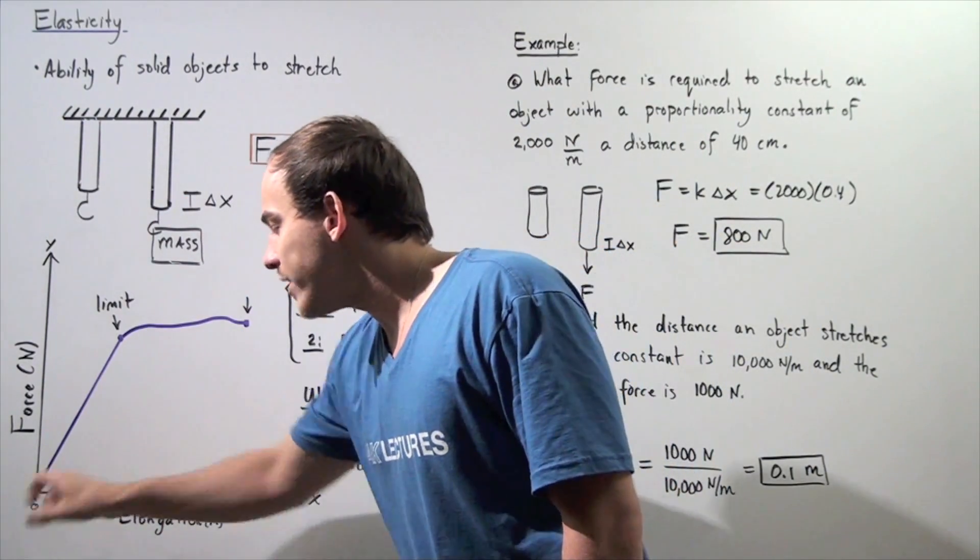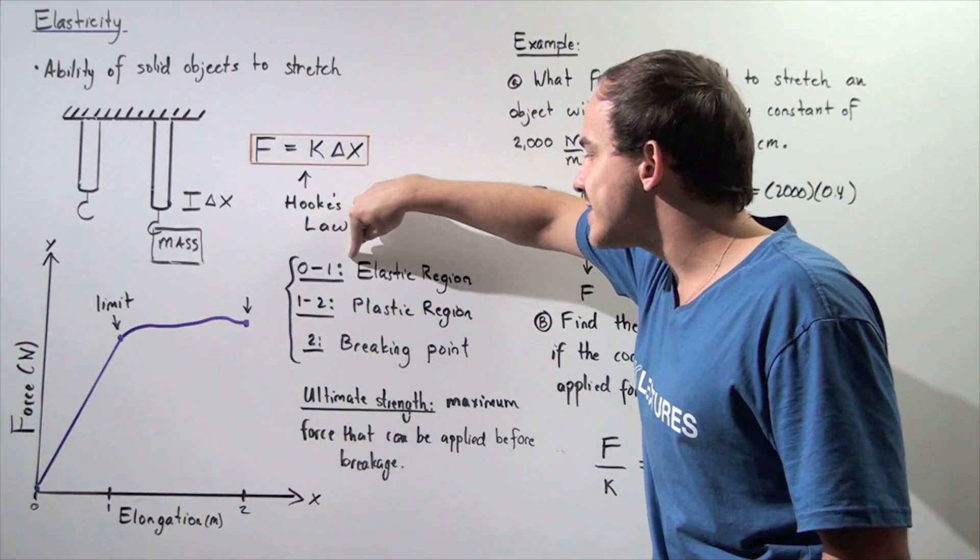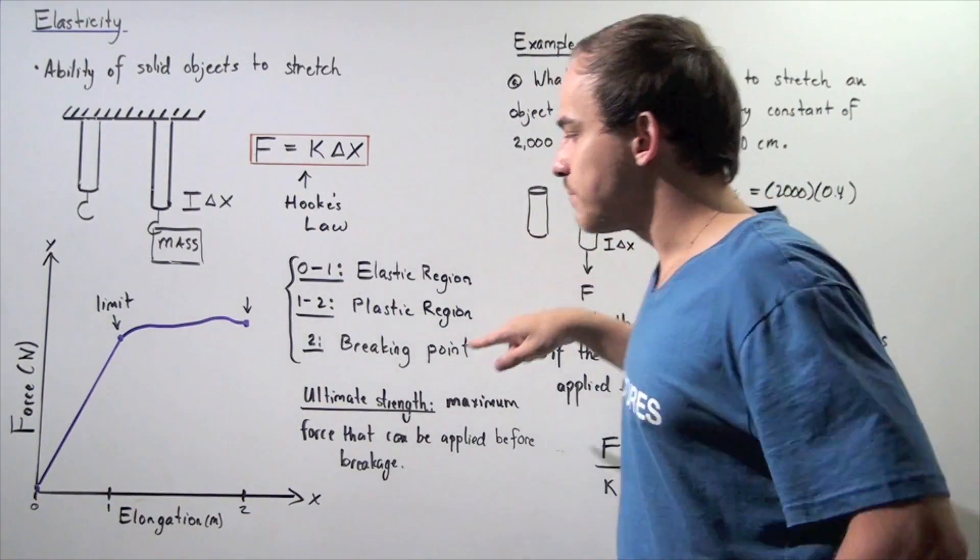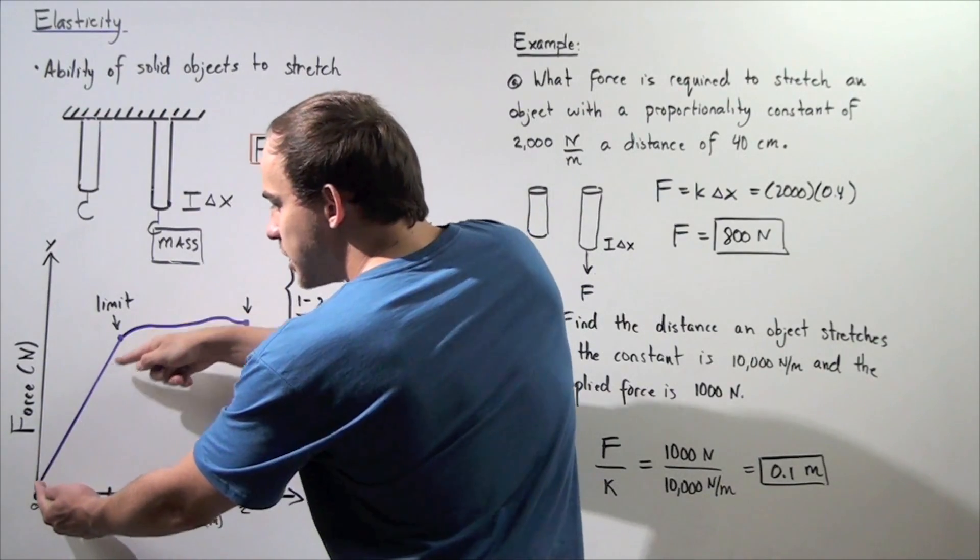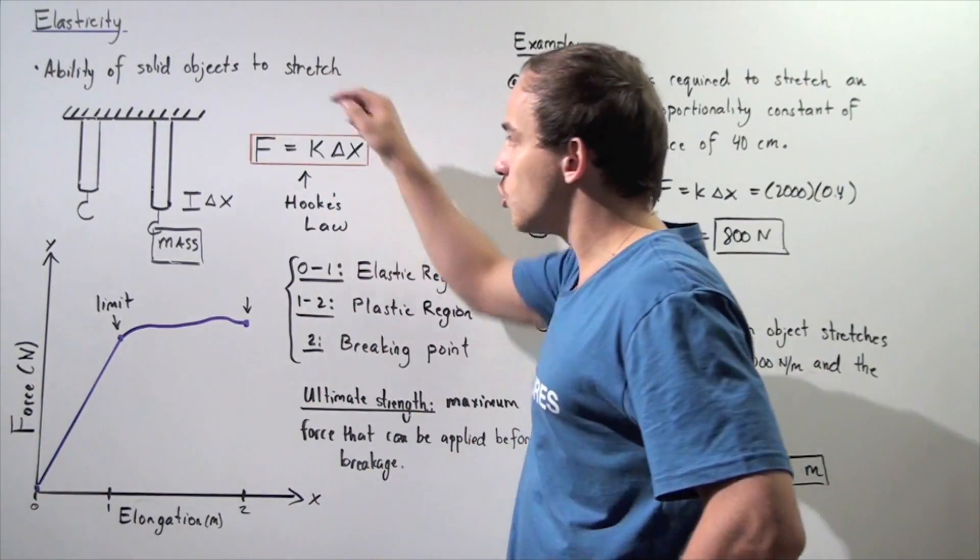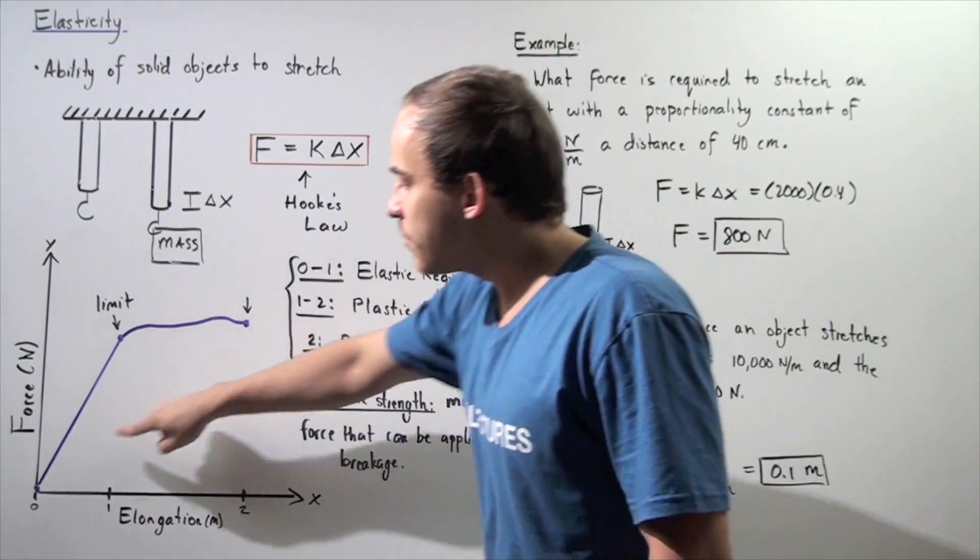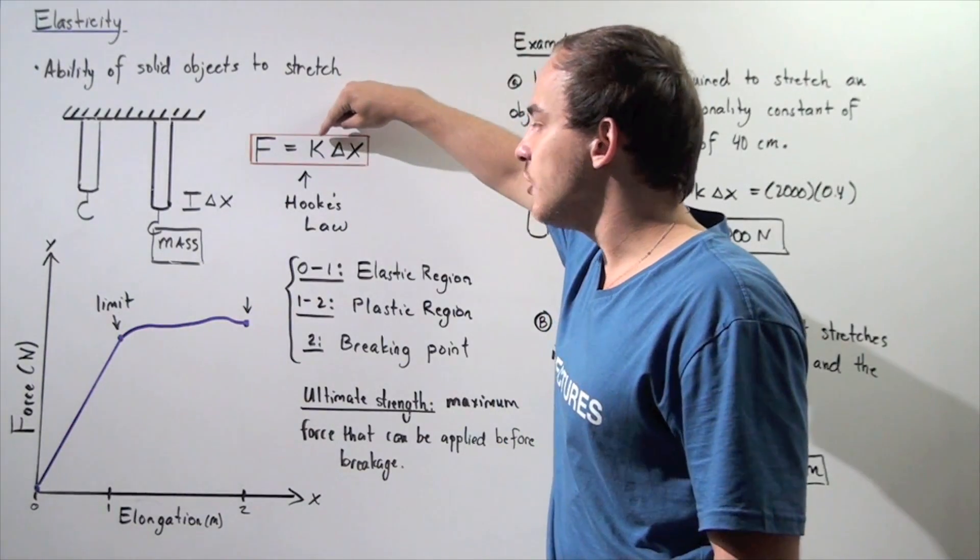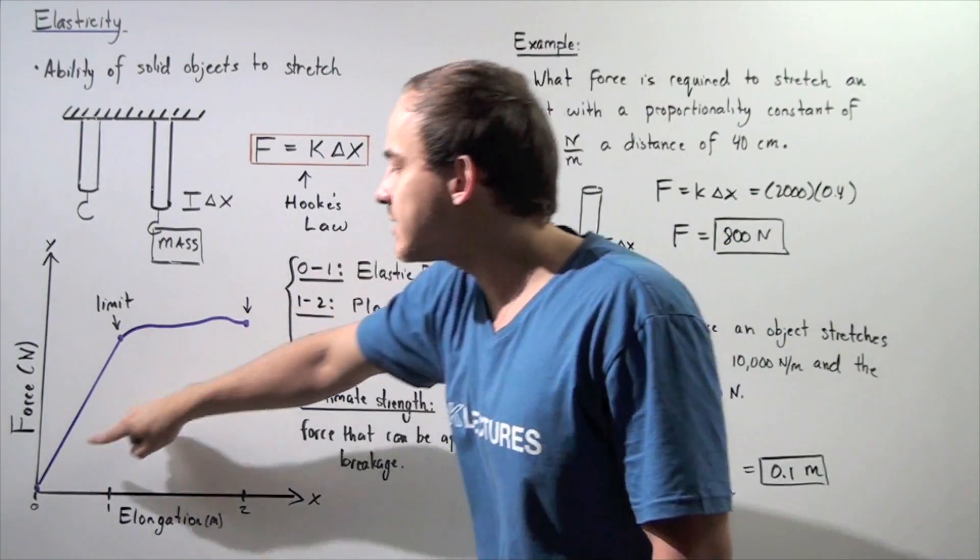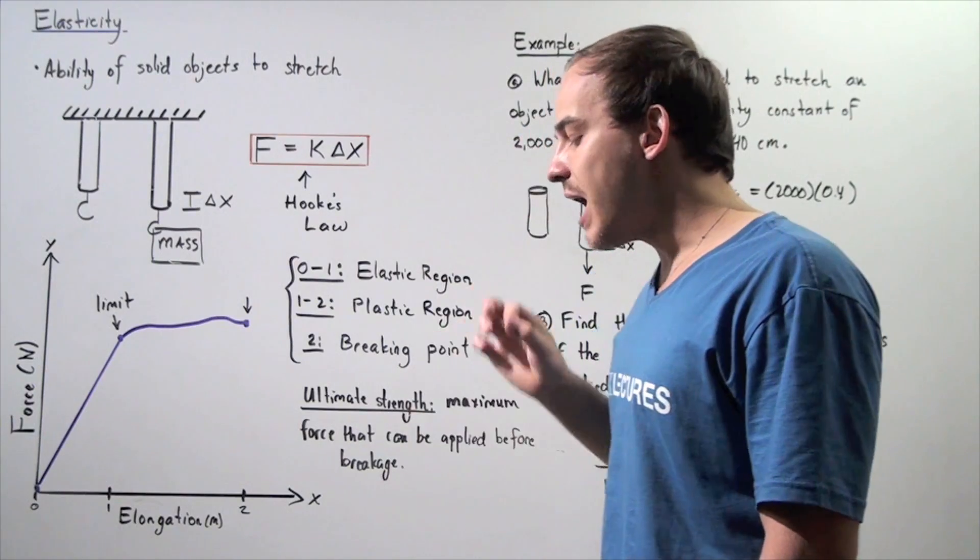Now, the region from the point zero to the point one is known as the elastic region. Along this region, our solid follows Hooke's law. So this slope is simply the value of K, because K is positive, the slope is also positive.